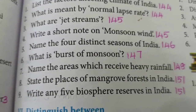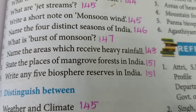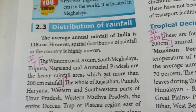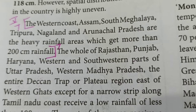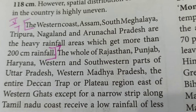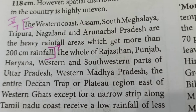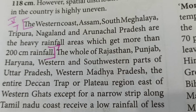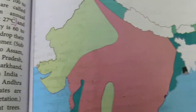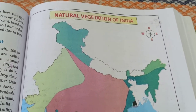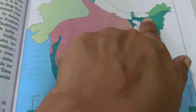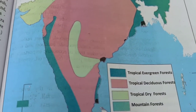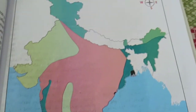Next question: Name the areas which receive heavy rainfall. The heavy rainfall regions — from the distribution of rainfall paragraph on the same page: The western coast, Assam, South Meghalaya, Tripura, Nagaland, and Arunachal Pradesh are the heavy rainfall areas which get more than 200 centimeters of rainfall. This map shown is the natural vegetation map — the green-colored places are where evergreen forests are found, corresponding to heavy rainfall areas.